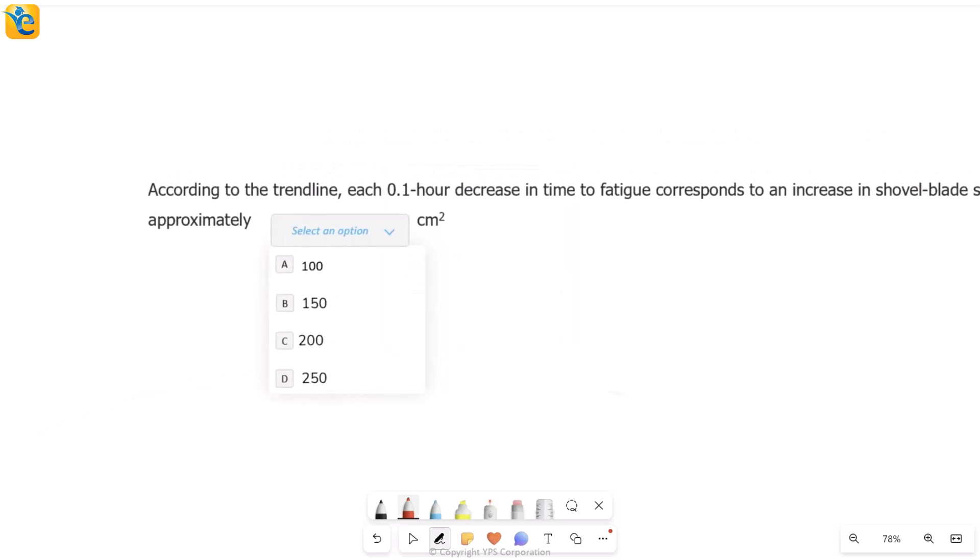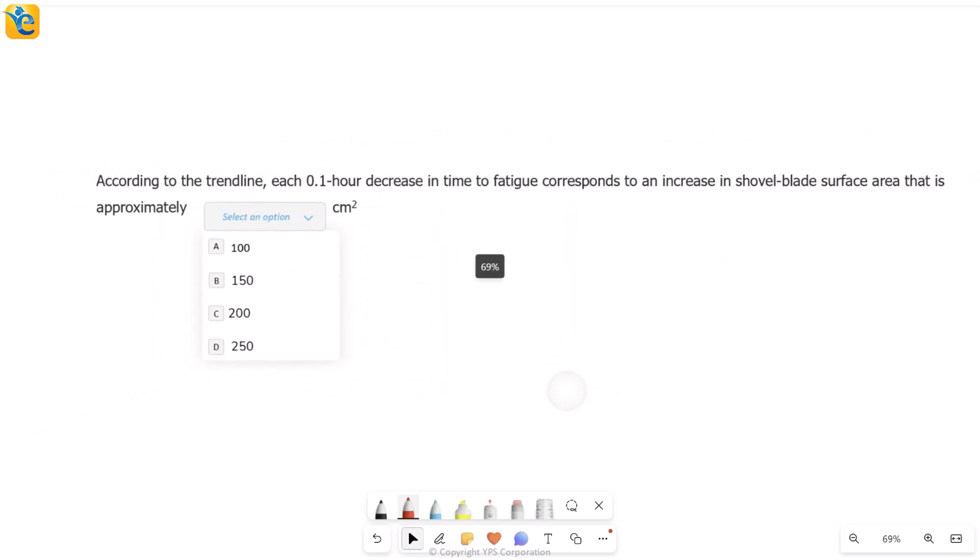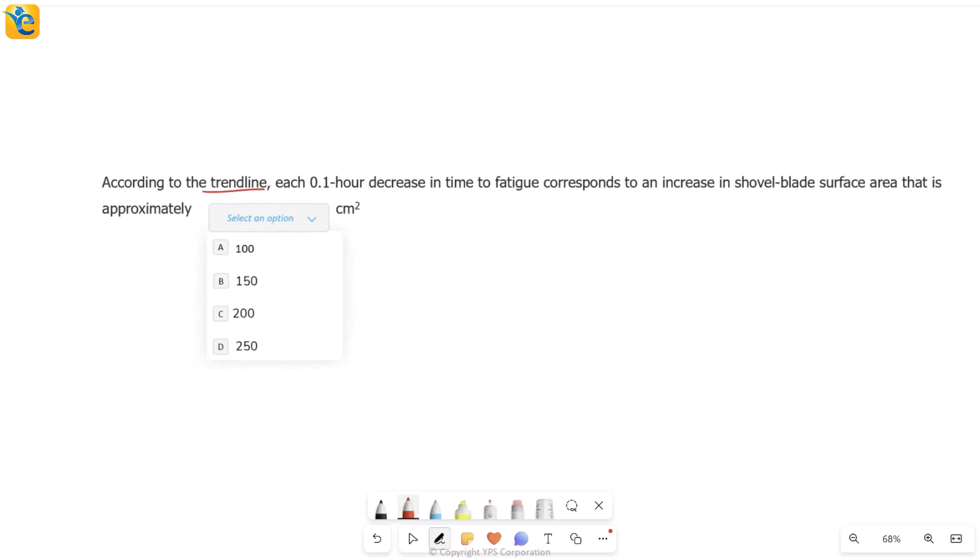Now look at the second statement. This is according to the trend line, meaning you'll rely on that straight line. According to the trend line, each 0.1 hour decrease in time to fatigue corresponds to an increase in shovel blade surface area that is approximately how much?